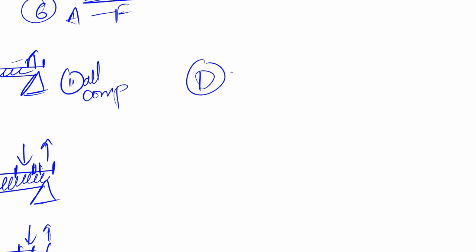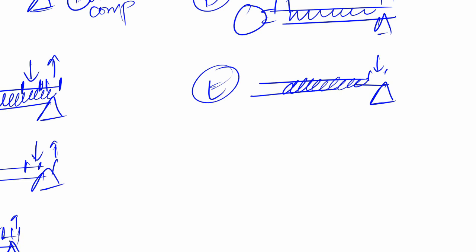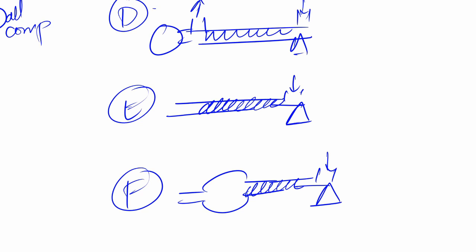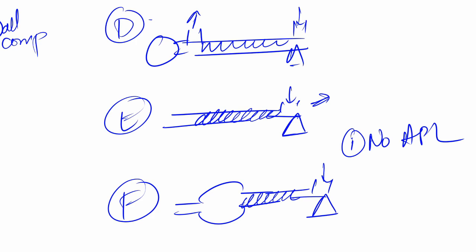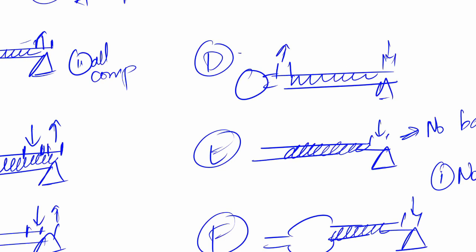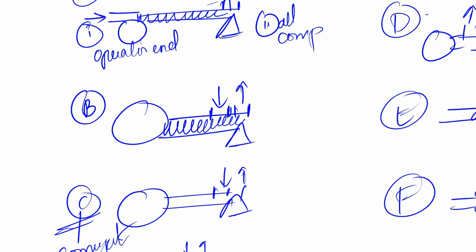Circuit D has a reservoir bag, an outlet, a corrugated tube, an inlet, and a face mask. Circuit E is open and has a corrugated tube, a fresh gas flow inlet, and a face mask. Circuit F has a reservoir bag, a corrugated tube, an inlet, and a mask. In E and F, there is no APL valve. Also, E has no bag. In D, E, and F the fresh gas flow is nearer to the patient, while in A, B, and C the APL is nearer.